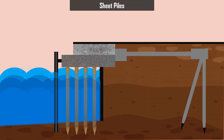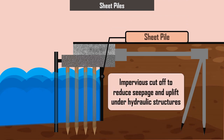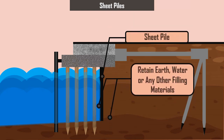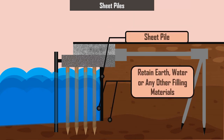Sheet piles: these piles are used as an impervious cutoff to reduce seepage and uplift under hydraulic structures. Sheet piles are also used as retaining walls constructed to retain earth, water, or any other filling materials.